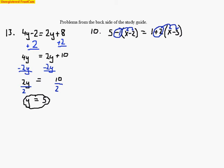Let's see what's left over. We've got this 5 that we'll bring down, and when we multiply, the signs are all going to change — it becomes a negative x and a positive 2. Watch the sign right here: negative times a negative makes a positive. This all equals 1 plus, then 2 times x makes 2x.